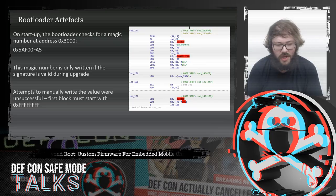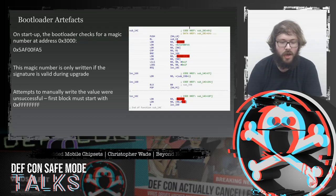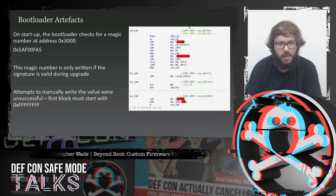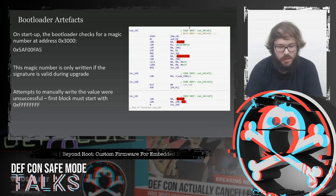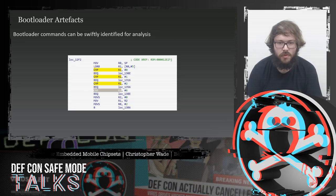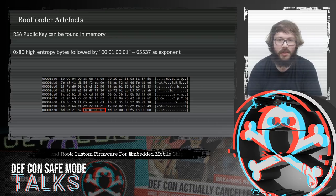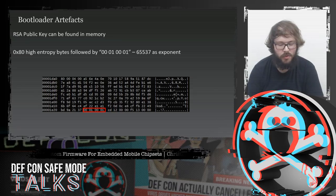I could now work out exactly how the firmware updates were securely implemented. On startup, the bootloader checked for a magic number at the start of the firmware — 0x5AF00FA5 — which was not present in the firmware payload itself. This magic number was written only after a firmware update occurred if the signature was valid, meaning the chip wouldn't have to verify the signature on every startup. I also found the state machine handling the commands — comparisons of 0, 1, 2, and 6 — and the RSA public key: 128 bytes followed by 0x00010001, which translates to 65537, the standard public key exponent.